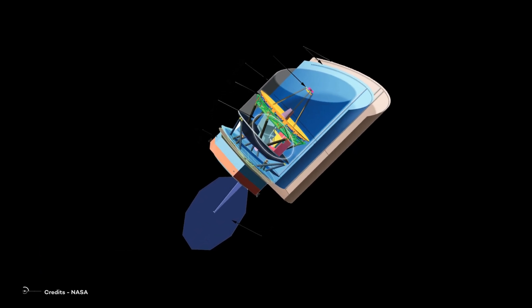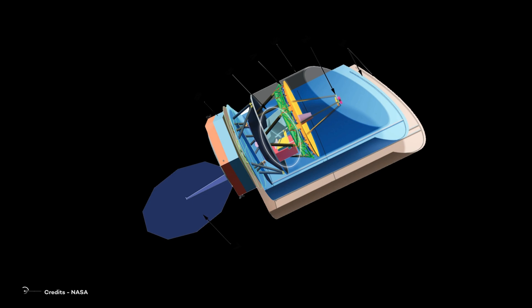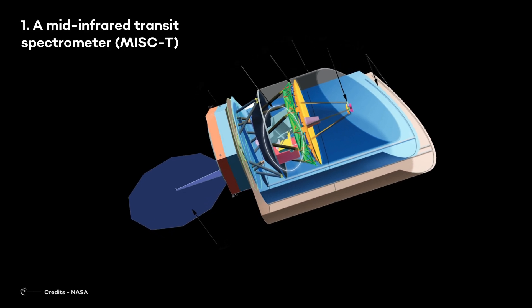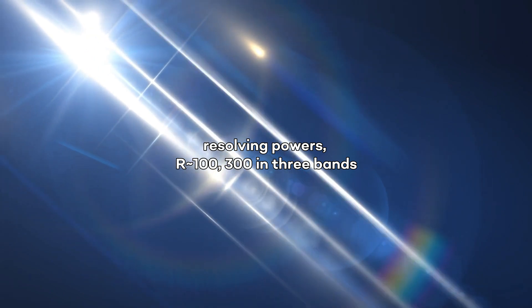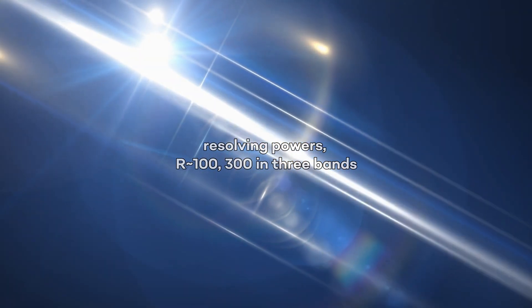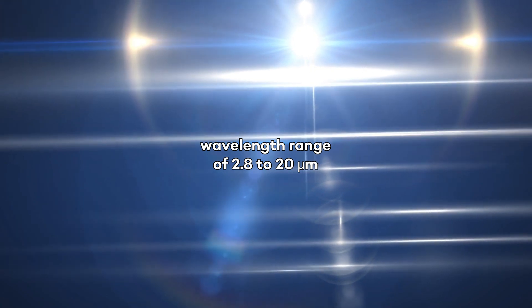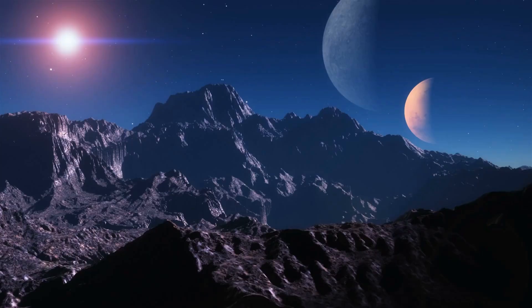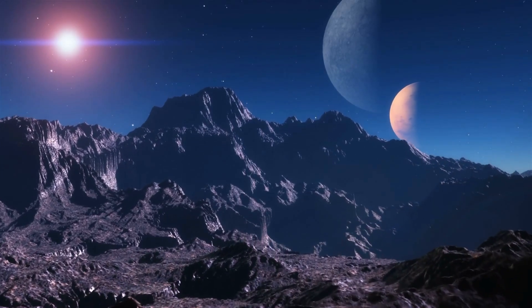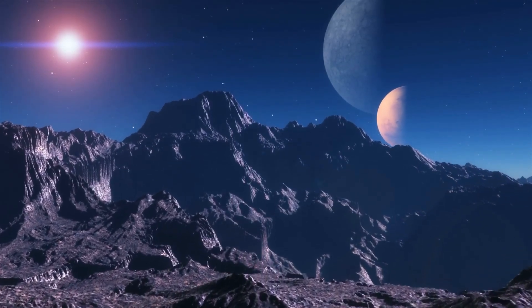The basic design of the OST contemplates a load of three instruments. A mid-infrared transit spectrometer that operates from 5 to 30 microns, with resolving powers of approximately 100, 300 in three bands. MIS-CT will measure the spectra of transiting exoplanets in the wavelength range of 2.8 to 20 micrometers and offer unprecedented sensitivity, enabling detections of definitive biological signatures in stars and exoplanets.